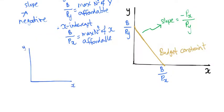Here is our budget line once again. You can see the intercepts are B over Py and B over Px.